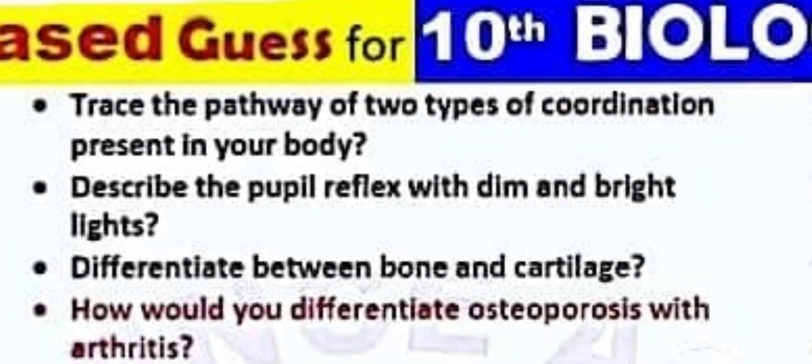These are chapter-wise questions. Trace the pathway of the two types of coordination present in your body. Describe the pupil reflex with dim and bright lights.